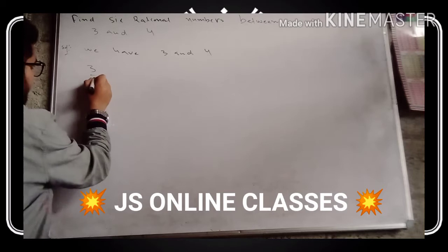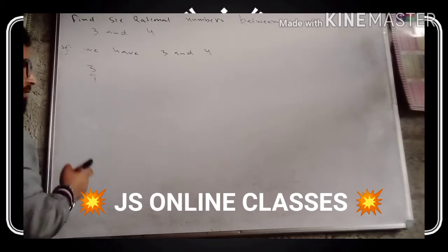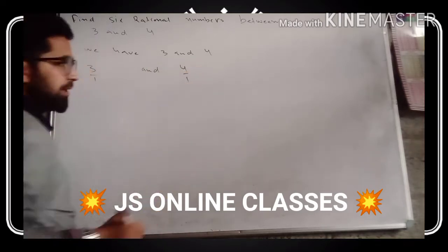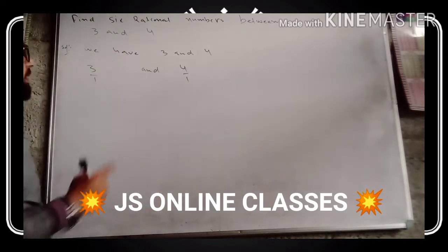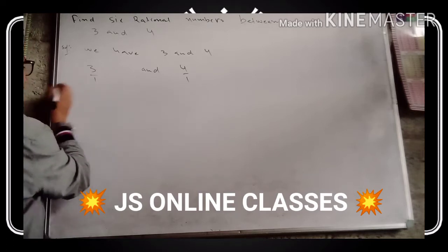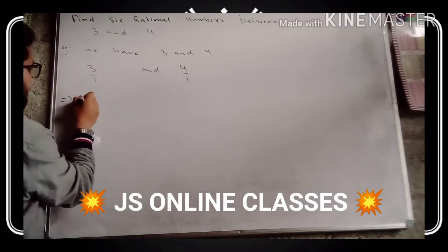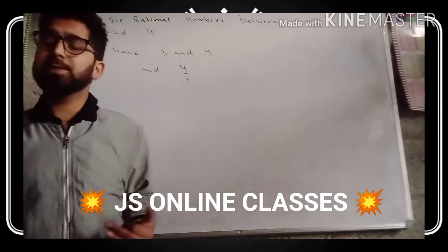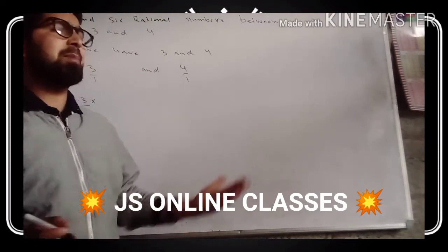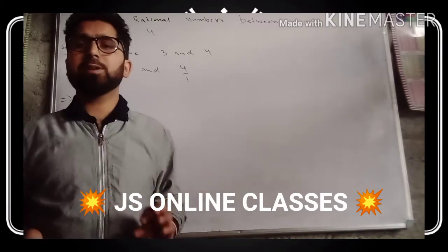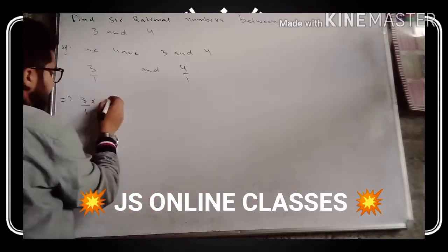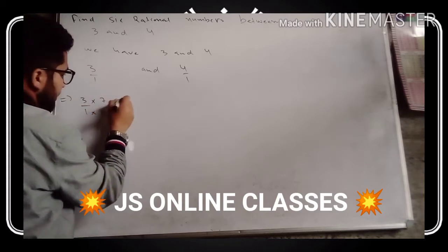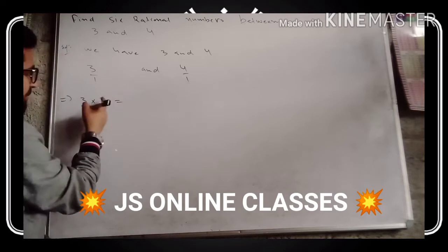We can write three in the form three divided by one, where three is the numerator and one is the denominator. We also have four written as four divided by one. Now, to find six rational numbers, we multiply both sides by seven — we multiply three divided by one by seven on both sides, giving us twenty-one divided by seven.